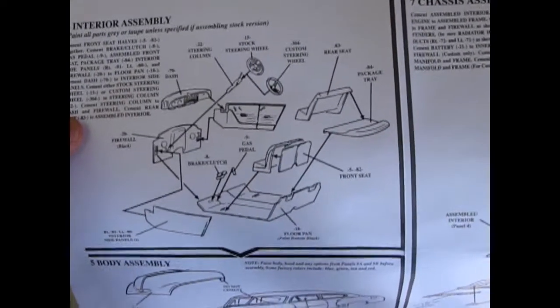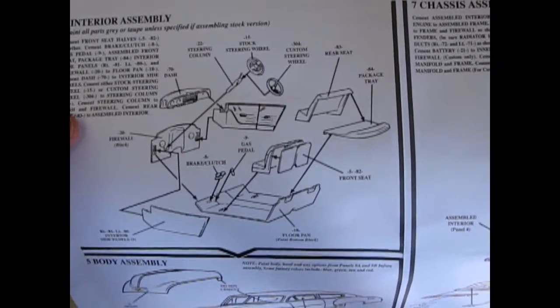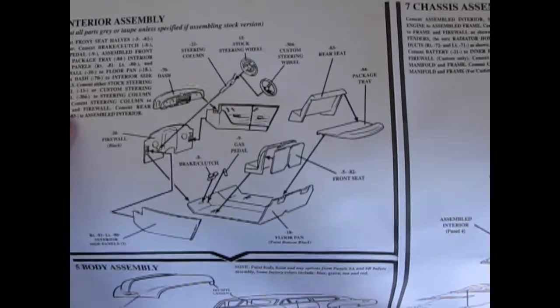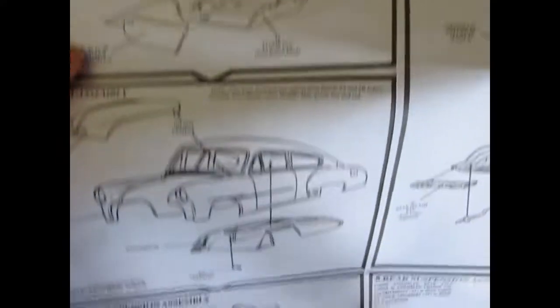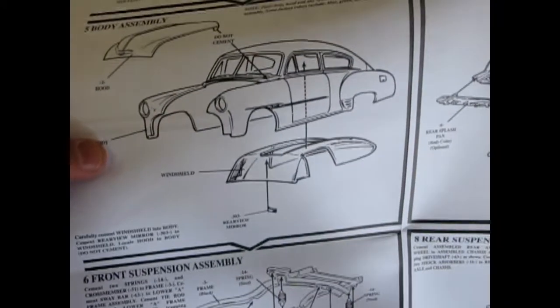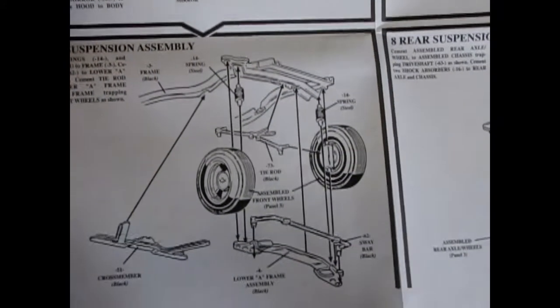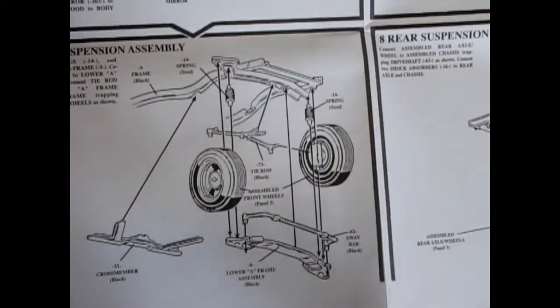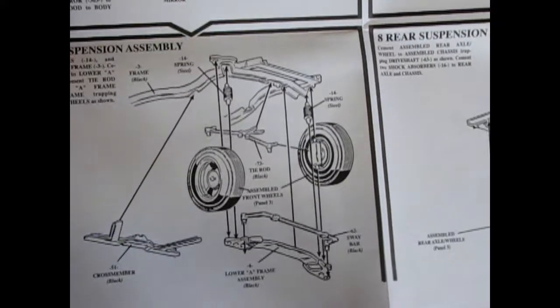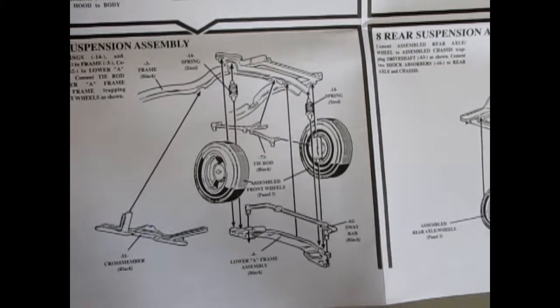And then of course we have our interior sketch. The only custom bit you get in here is a steering wheel. Everything else is factory stock. And there's the body. And the front suspension, which as you can see could be made poseable if you drill out your tie rod ends and make a couple little metal pins on the back of the front spindle.